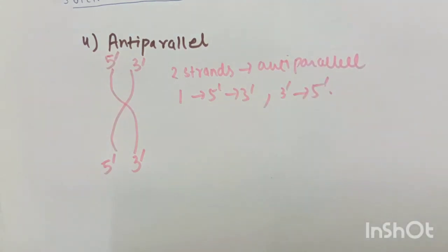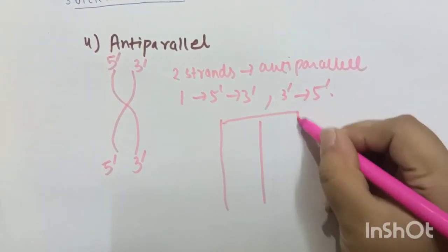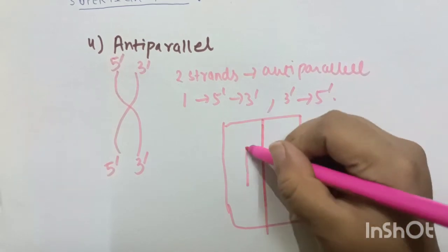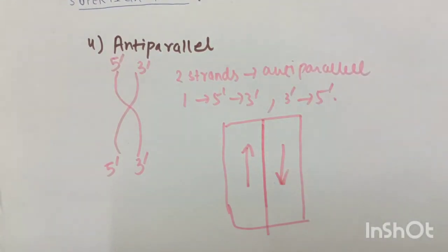This is similar to a road that is divided into 2, each half carrying traffic in opposite direction. If this traffic is moving this side, then this traffic would be moving that side. This is how it means to say anti-parallel.